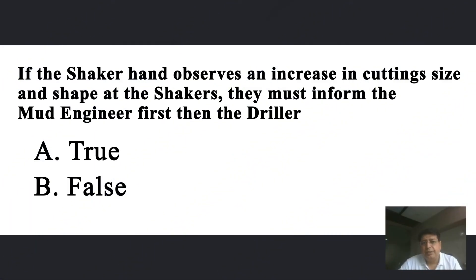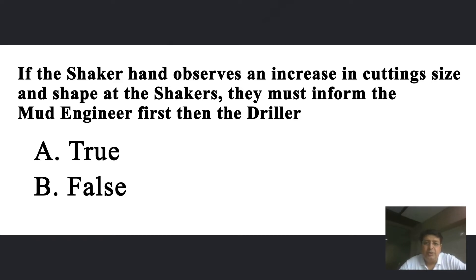The question is: if a shaker hand observes an increase in cutting size and shape at the shaker, then they must inform the mud engineer first, then the driller. So this is the question. First of all, what is the cause of change in cutting shape and size? We need to understand that whenever formation pressure is increasing, it will start giving us some indications called warning signs — warning signs of increase in formation pressure.